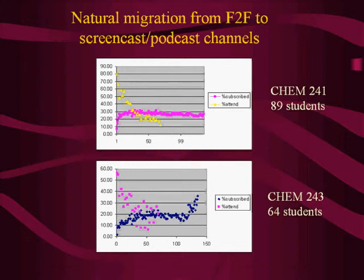This yellow line shows attendance from the first day of class until the end. By the last lecture, only 10% to 20% of students were still showing up. What's interesting is that I looked at performance between those two groups of students, and the performance was the same. If they just watched my lectures and never came to class, they did just as well as those who still came.